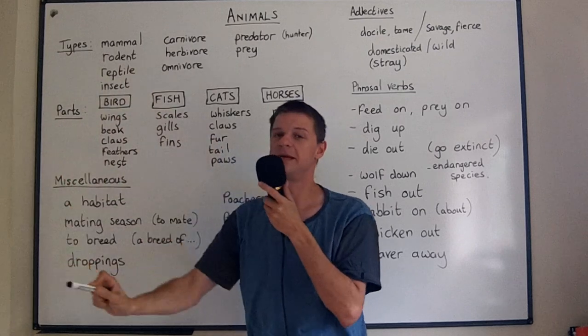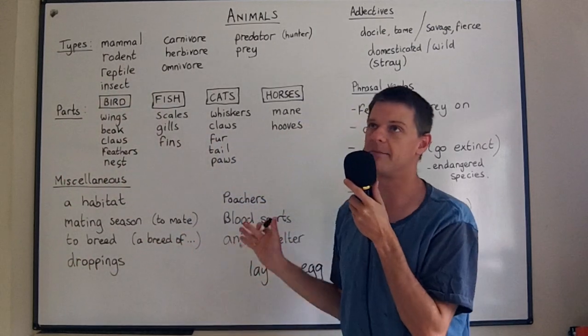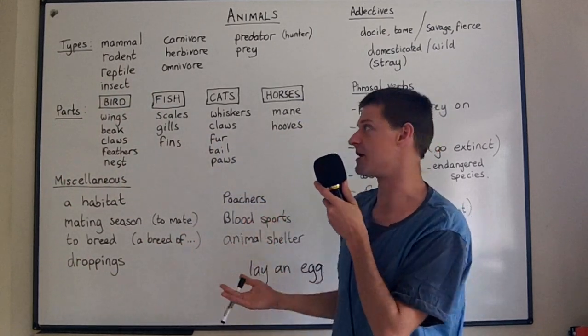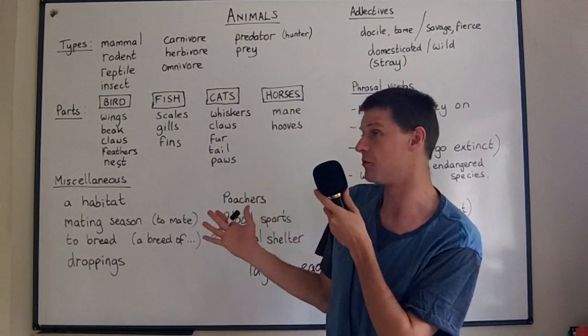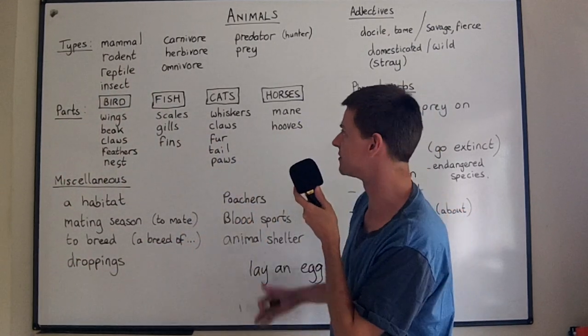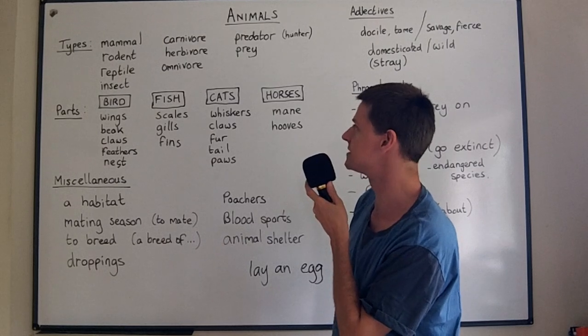Rodents would be animals like mice and rats — very small mammals. A rodent is a type of mammal.